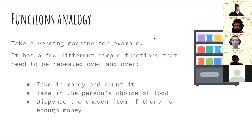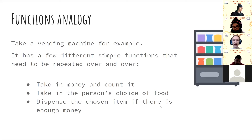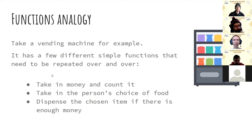Here's a bit of an analogy: if we have a vending machine, vending machines do a lot of different things and they'll do these things many times again and again. We could separate out what it's doing into different functions — taking in money and counting it, taking a person's choice of food, dispensing the item if there is enough money, maybe returning money if there's something left over. These different functions would each correspond to one simple thing that the vending machine does.